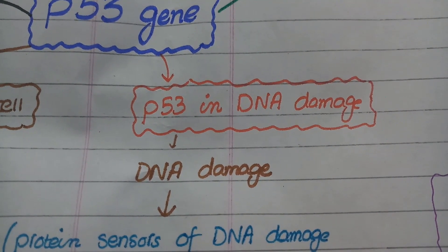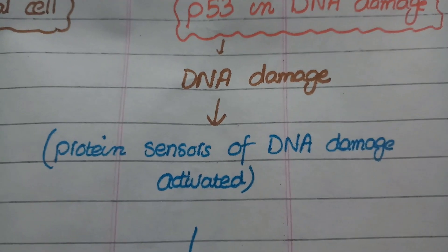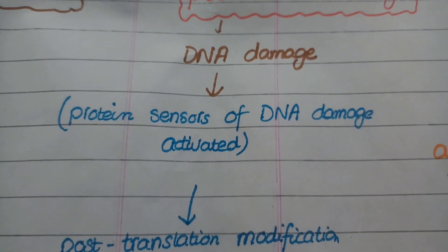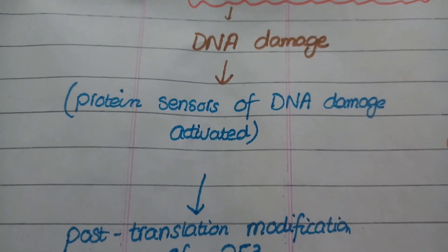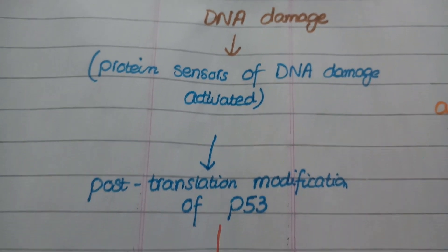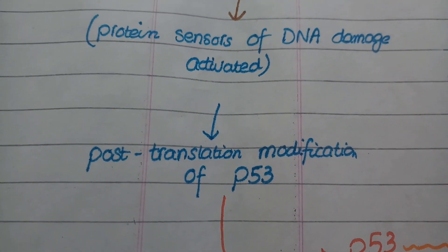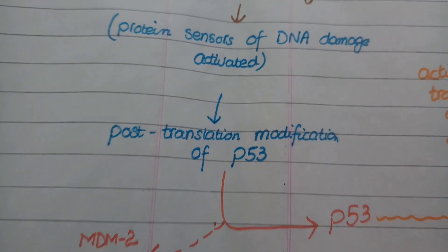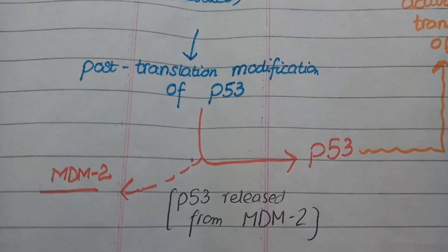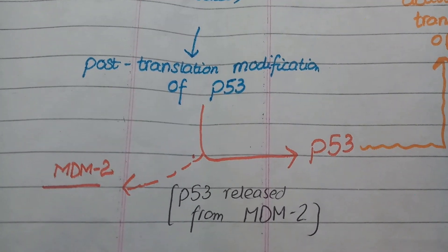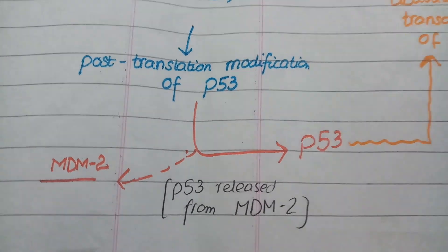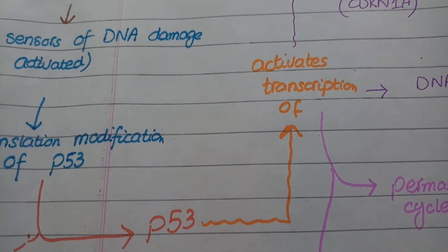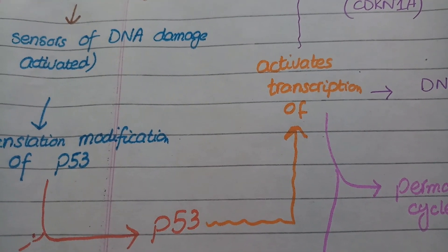Whenever there is DNA damage, there are sensor proteins in cells that detect the damage to DNA. One of these classical sensor proteins is ATM. When these sensor proteins detect DNA damage, they are activated and cause post-translational modification of p53. After p53 protein is modified by these sensors, it no longer remains bound to MDM2. So p53 is released from MDM2, persists for a long time, moves inside the nucleus, and induces transcription of multiple genes. Basically, p53 plays its role by activation of transcription.